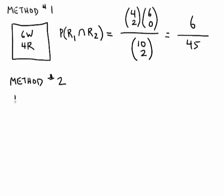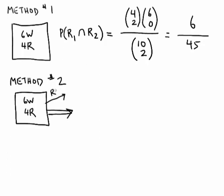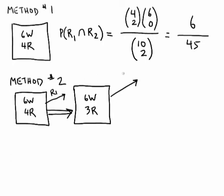The other way of solving this problem is again to draw a box, starting with six white and four red balls. What we're going to be interested in is choosing a red ball on the first draw. If we do that, we would be left with six white and three red in the box after that first draw, and now we're going to be interested in drawing a second red ball.